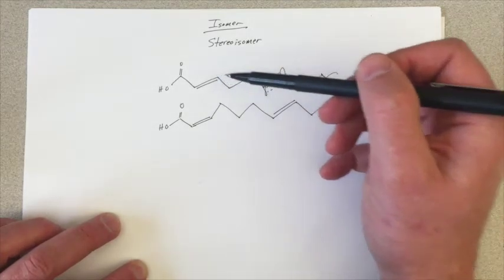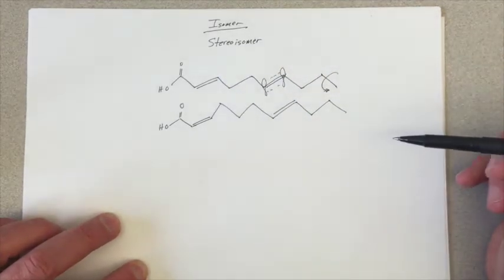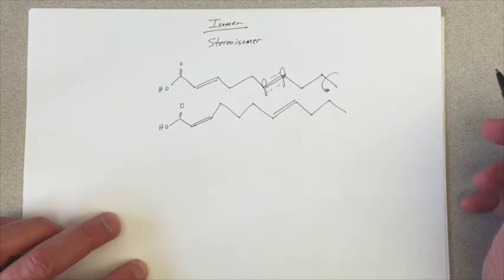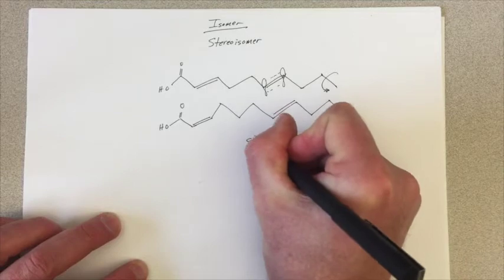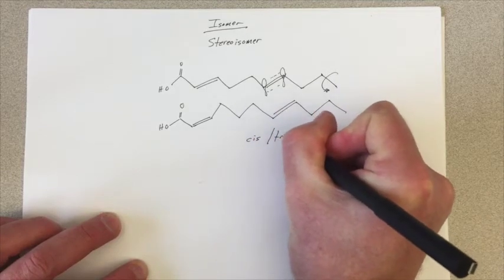One where the double bond looks like this, one where it looks like that. Now, the nomenclature we use is, at least the first level of it, is called a cis trans nomenclature.